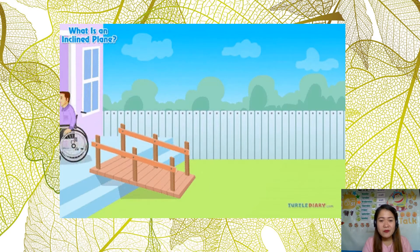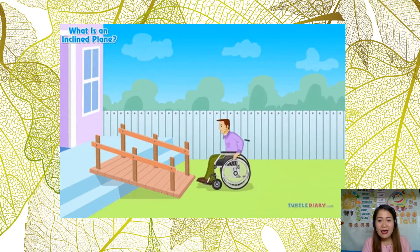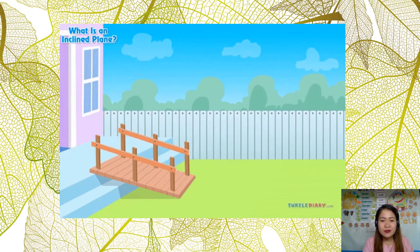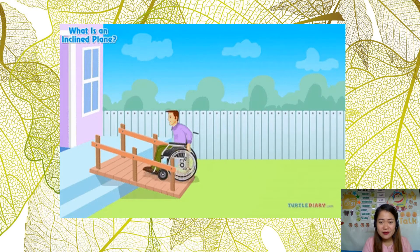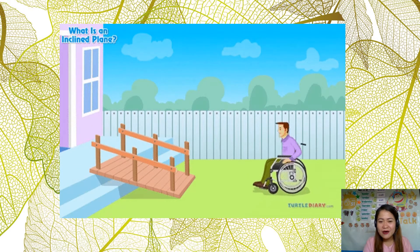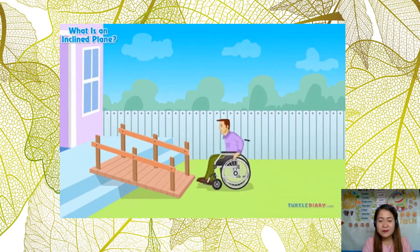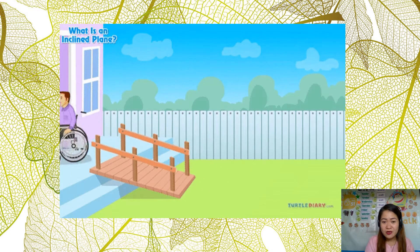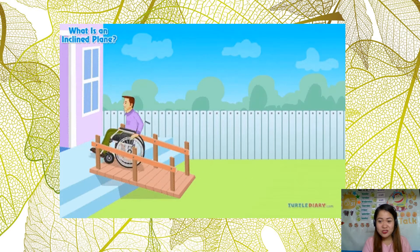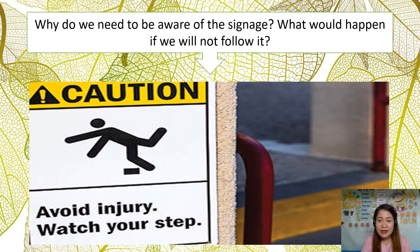As you can see in the picture, there is a man riding on a wheelchair. A wheelchair has a wheel and axle. We could also see the ramp, and a ramp is an example of an inclined plane. So we have the wheelchair as the wheel and axle and the ramp as an inclined plane. The man can go up the house through the help of the wheelchair and by the use of an inclined plane.